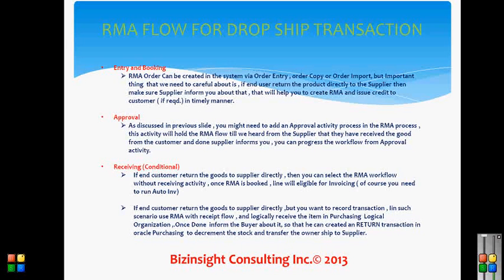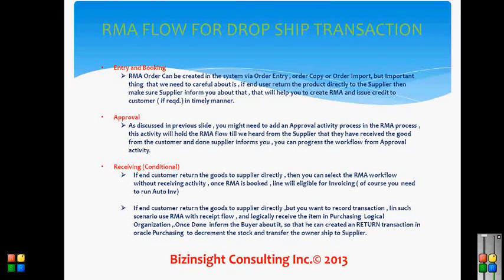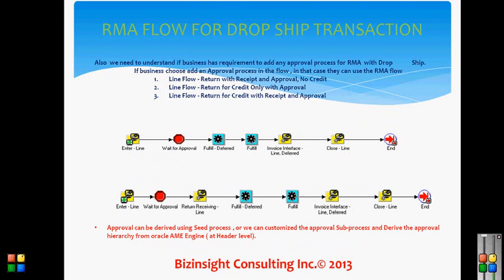The next step is approval. As discussed in the previous slide, you might need to add an approval activity process in the RMA process. This activity will hold the RMA flow until we hear from the supplier that they have received the goods from the customer. Once the supplier informs you, you can progress the workflow from the approval activity.